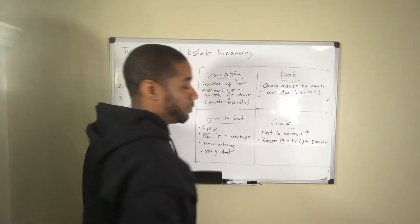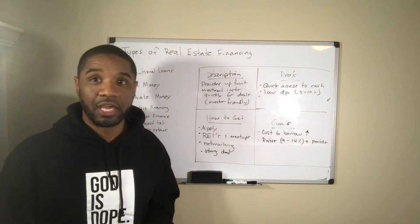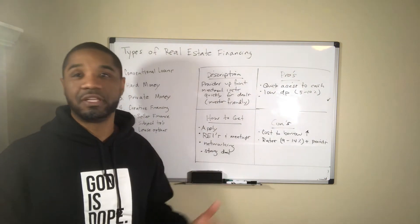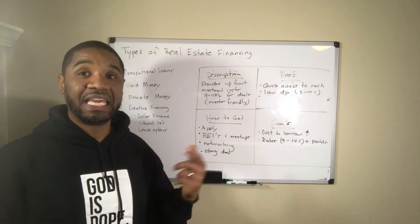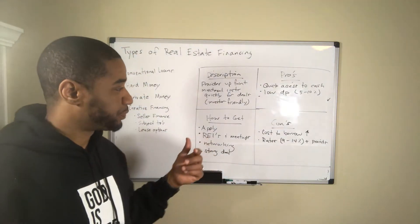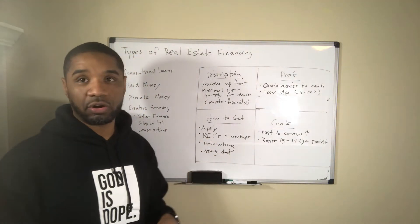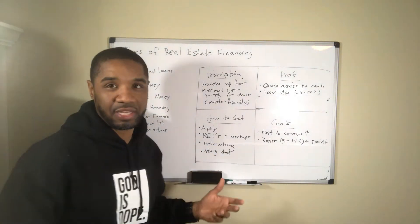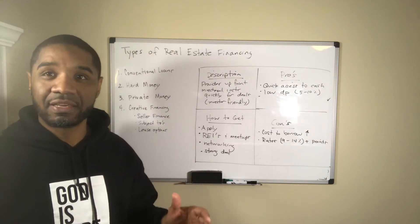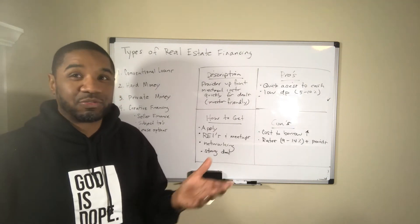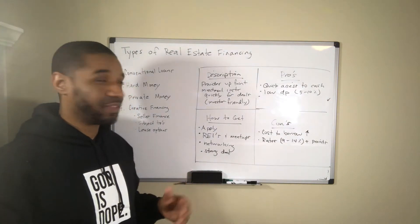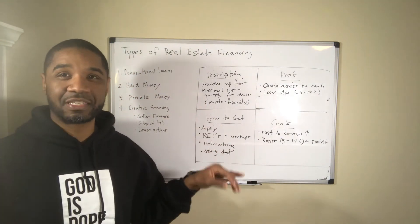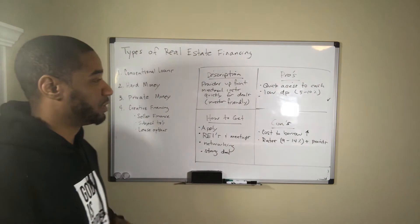Points are origination fees you pay upfront as a percentage of the loan — they take the total loan amount and charge you that many points, which you pay upfront in addition to the already very high interest rate. So hard money lending is convenient but you're going to pay for it. There's really not a whole lot in life that's free, and hard money lenders are going to cost you a lot more money.